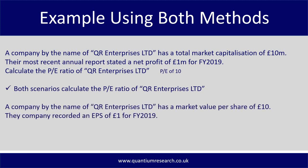Both scenarios calculate the P/E ratio of the given company, so it doesn't matter which formula you use — it's dependent on the data you have. In real-life market conditions, the P/E ratio is usually calculated for you. Using the second formula with the same company: QR Enterprises Limited has a market value of £10 per share and recorded an earnings per share of £1 in full year 2019. Taking the market value per share of £10 and dividing by the EPS of £1, you still get a price-to-earnings ratio of 10.